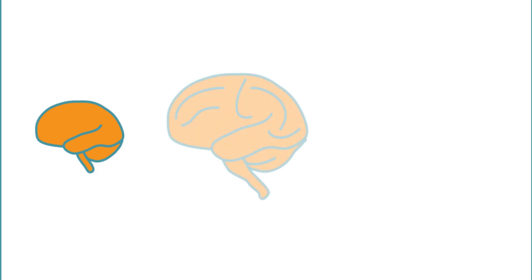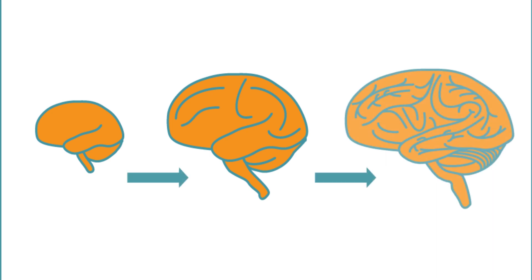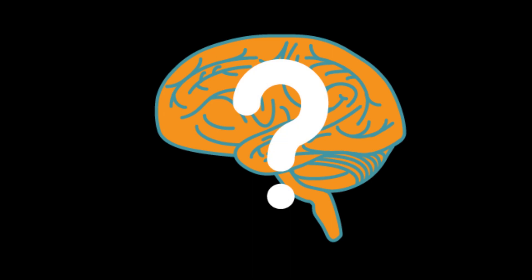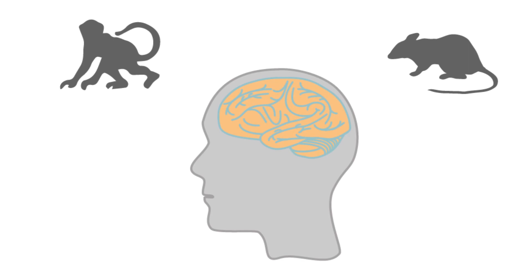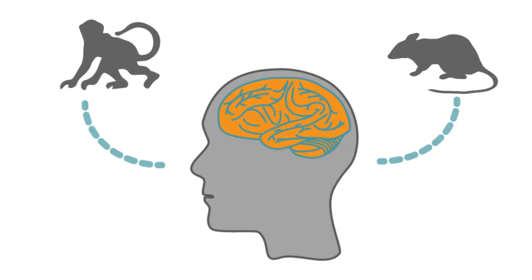The development of disorders such as autism and schizophrenia are thought to have their origins in the developing brain. But studying the development of the human brain is challenging. Scientists have up until now relied on animal models, like mice and monkeys, to provide insights into this process. Animal models, however, provide an imperfect representation of the human brain.